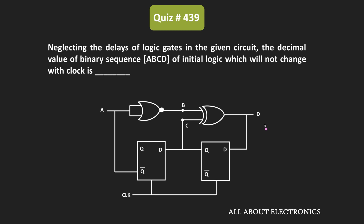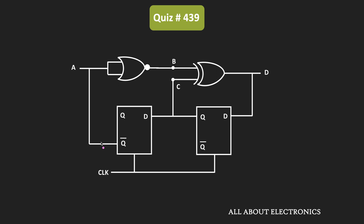In this question, we have been given a digital circuit and we need to find the initial values of A, B, C, and D such that even after the clock pulses these values will not change. This is a sequential circuit with two D flip-flops, and the output of these flip-flops is given to some combinational circuit. The propagation delay of these logic gates can be neglected, so we assume it is equal to 0.